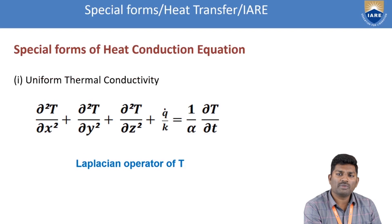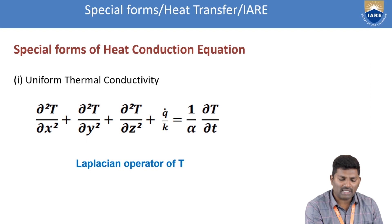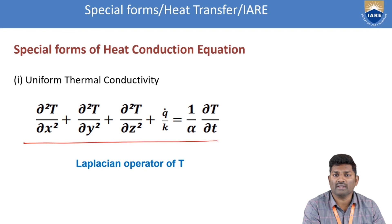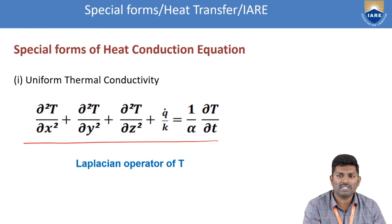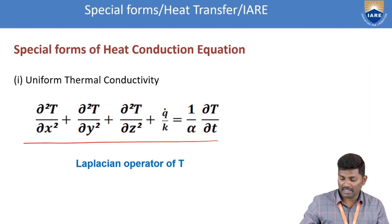The special forms of the heat conduction equation are as follows. The first form is called the general heat conduction equation with uniform thermal conductivity, where the material has the same thermal conductivity property throughout. That equation is: ∂²T/∂x² + ∂²T/∂y² + ∂²T/∂z² + q-dot/k = (1/α) ∂T/∂t. This is also called the Laplacian operator of T.